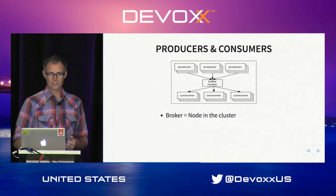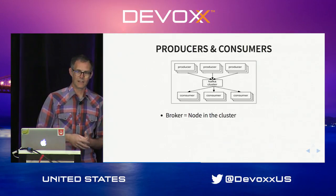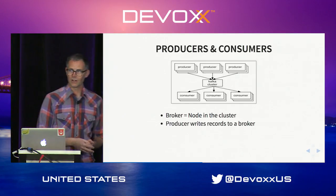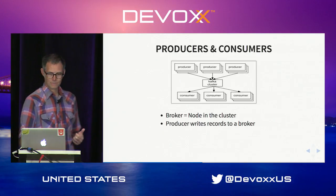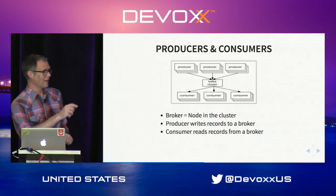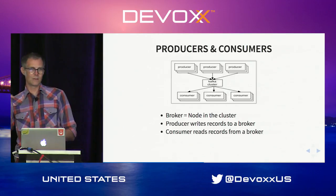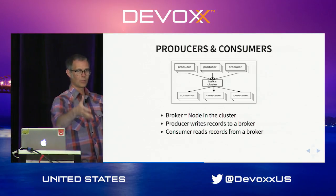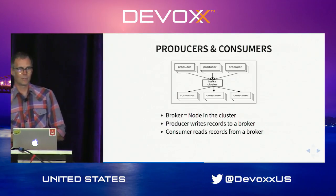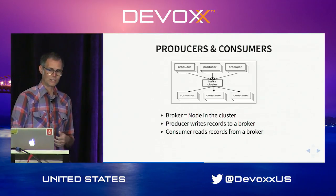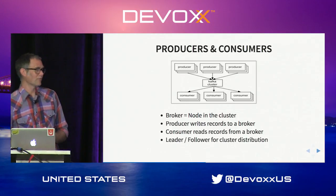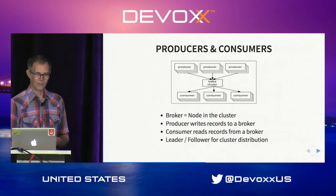In Kafka, brokers is the name for a node in the cluster. A producer writes records to a broker, and a consumer reads records from a broker. This is important: Kafka is not actually doing push. The consumer connects to a broker and asks for blocks of records — it's not a push; the consumer is asking for records. We use a leader-follower architecture for cluster distribution.